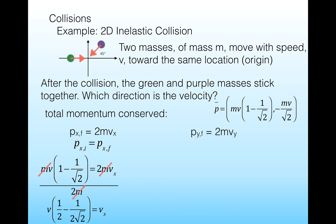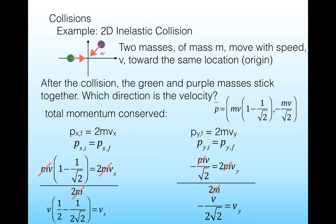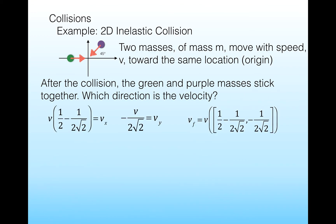Now the y-direction: the final momentum is 2m·vy. Setting initial equal to final, 2m·vy equals minus mv over the square root of 2. Dividing by 2m and canceling the m's, we get vy equals minus v over 2√2. This is moving in the negative y-direction, so the center of mass is still moving downward.